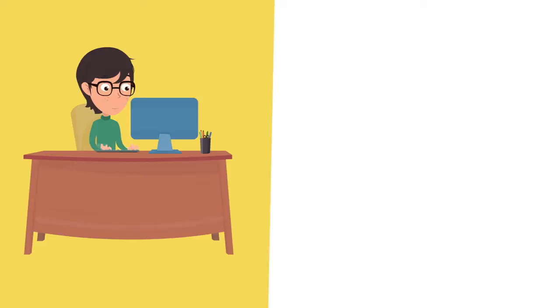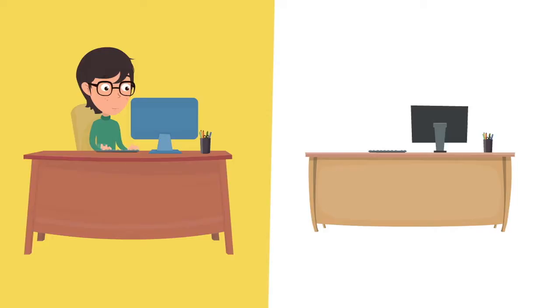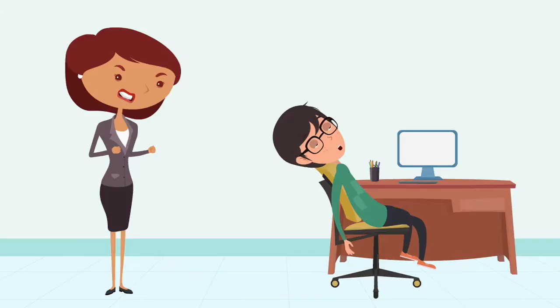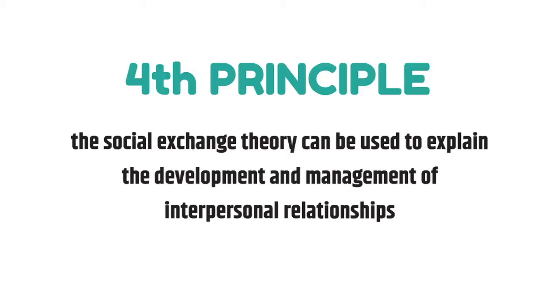Sam and Philip both depend on each other. Sam needs Philip to perform his duties as an assistant, and Philip needs Sam in order to be employed. Without each other, there'd be no exchange. However, if Sam notices Philip has not been completing the tasks she has been assigning him, Sam is likely to fire Philip.